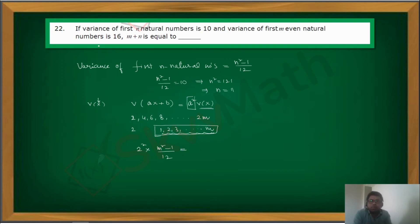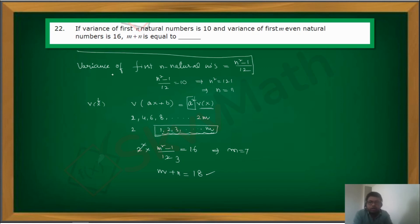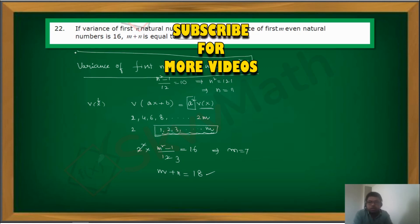It is already given in the problem that the variance of the first m even natural numbers is 16. So, 4·(m² - 1)/12 = 16, from which you get m = 7. Therefore, m + n = 7 + 11 = 18. I used the shortcut: variance of first n natural numbers is (n² - 1)/12, and the property: Var(aX + b) = a²·Var(X).